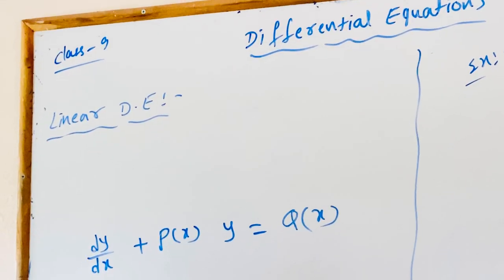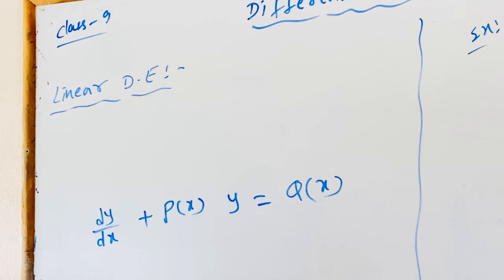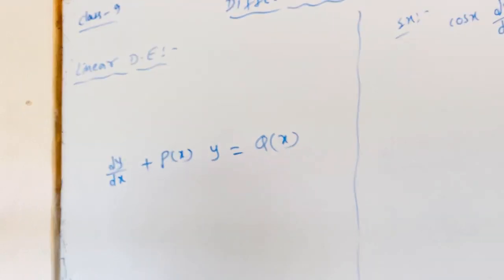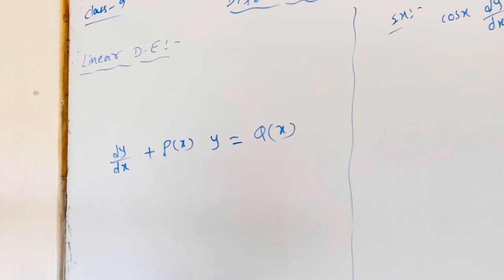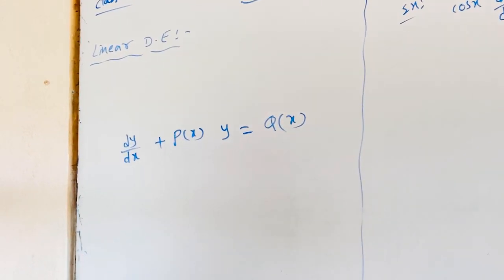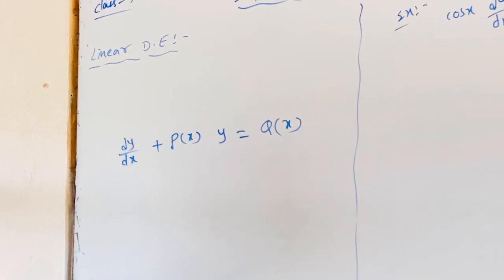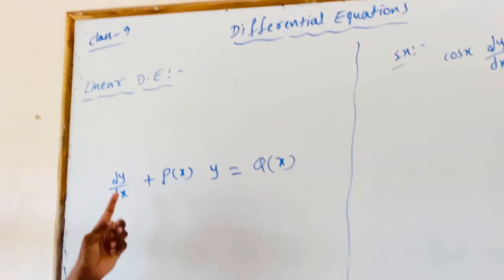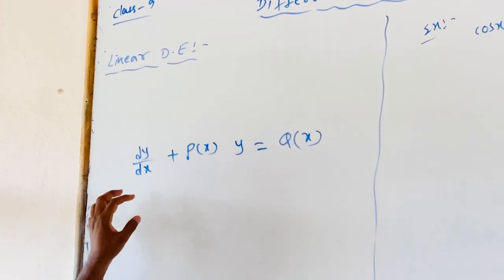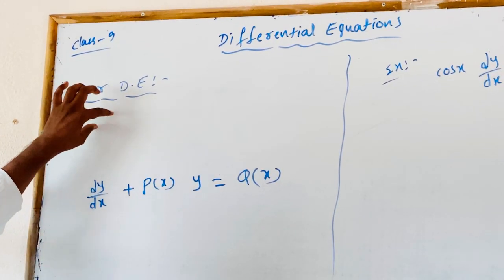What is a linear differential equation? Linear means first degree. The dependent variable and its derivative have only first degree and they do not multiply together. We do not get y into dy/dx. So it is not linear if it is not first degree.